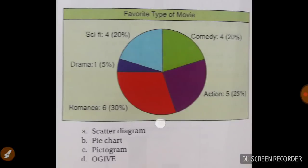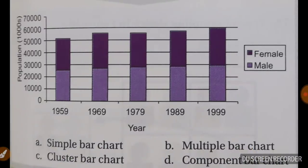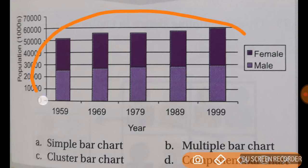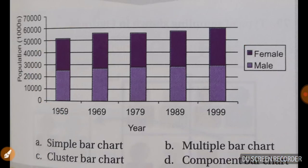Now tell me what is it? It is a pie chart. What is it? It is a bar diagram. Now tell me what is this one. Is it a bar diagram? Or is it a multiple bar chart? Or cluster? Or simple bar chart? Or component? So confused.